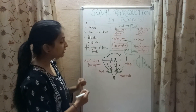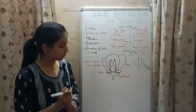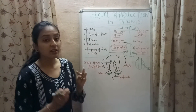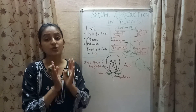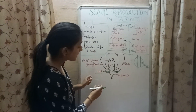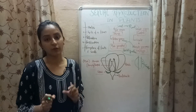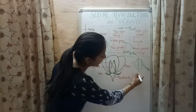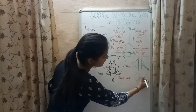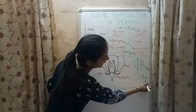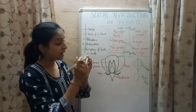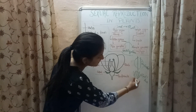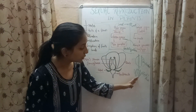Now let's come to the parts of a flower. The major parts of the flower include receptacle, sepal, petals, carpel, and stamen. Receptacle is the base of the flower to which all other parts are attached. Sepal is a green leaf-like structure of a flower which protects the flower during the initial stage. You must have seen the bud of a rose — it is covered by green leaf-like structures. These are not actually leaves; they are the sepals of the rose flower.